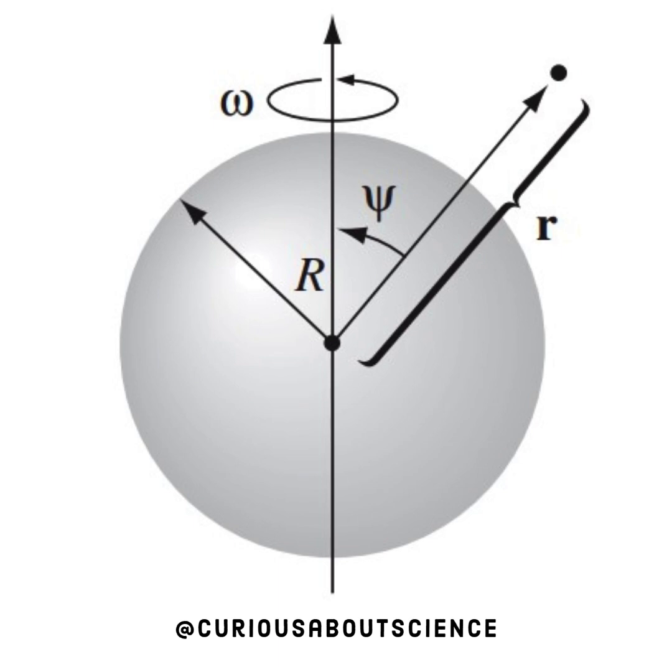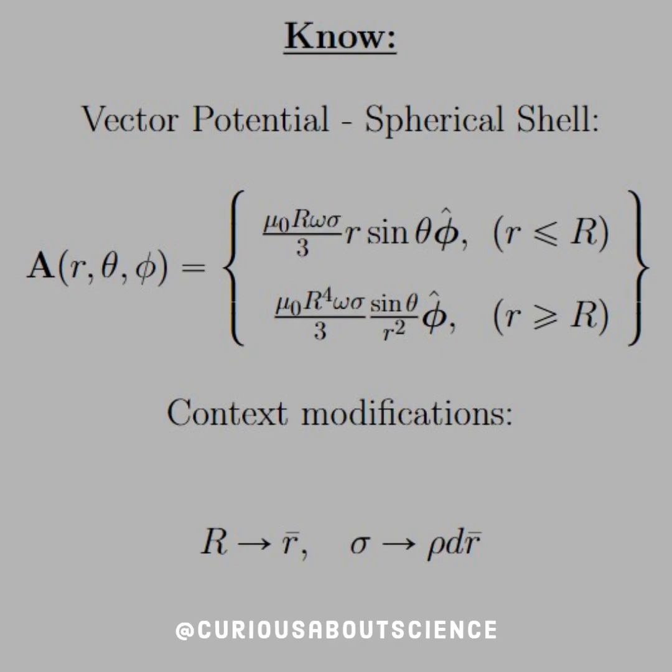So we know that we'll have to modify some things. So what we should know is the vector potential A as a function of r, theta, phi is equal to mu naught r omega times sigma over three r sine theta phi hat for r less than big R. And similarly, we have something compatible for r greater than big R.